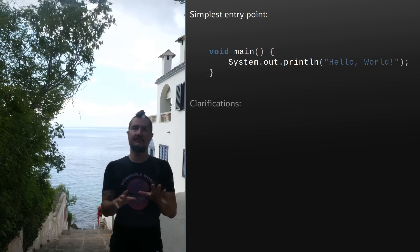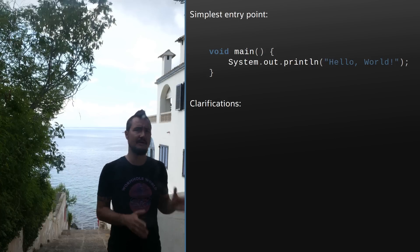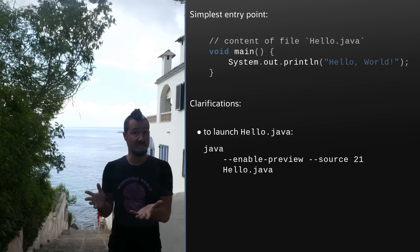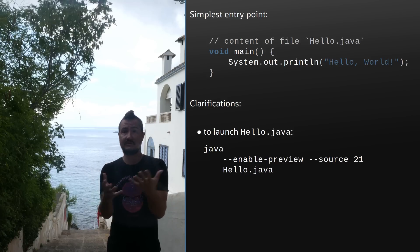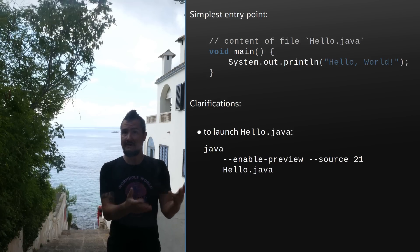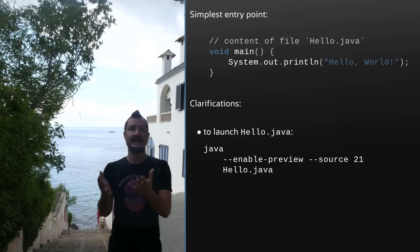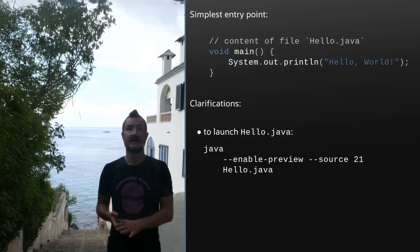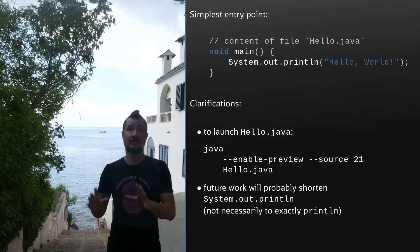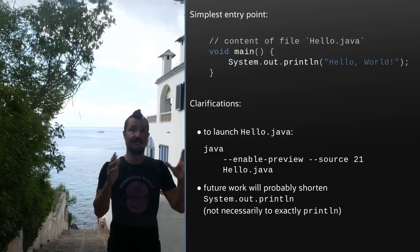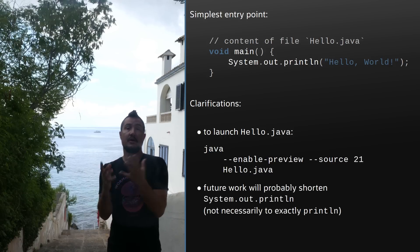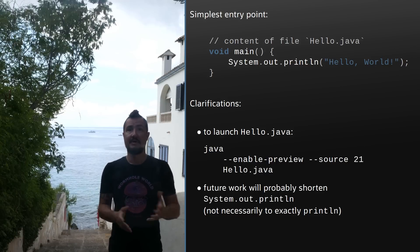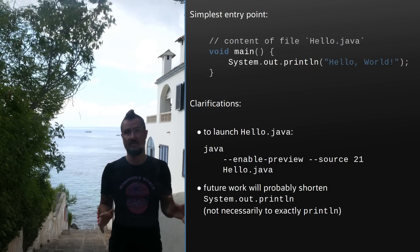Let me briefly clarify two points. First, this is a preview feature. So if you use it in a single source file program where it clearly shines, you need to add --enable-preview --source 21 to the java command. Second, there are plans to shorten System.out.println() to just println() and also offer a more succinct way to read from the terminal, but neither of that is part of JDK 21.